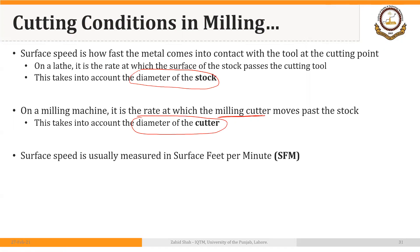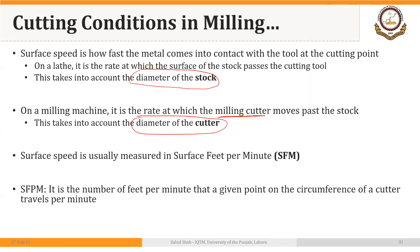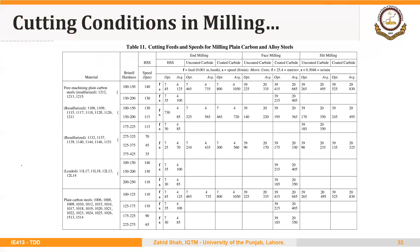The cutting speed is sometimes also called surface feet per minute. It is the number of feet per minute that a given point on the circumference of a cutter travels per minute. That is the definition of cutting speed in the case of milling.